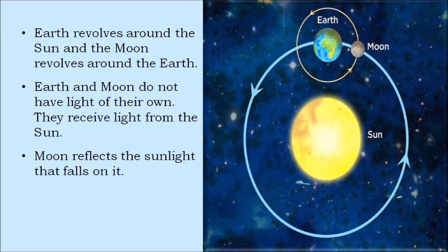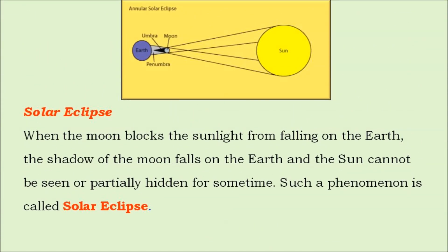Now let us see how solar eclipse occurs. When the moon blocks the sunlight from falling on the earth, the shadow of the moon falls on the earth and the sun cannot be seen or partially hidden for some time. And such a phenomenon is called solar eclipse.